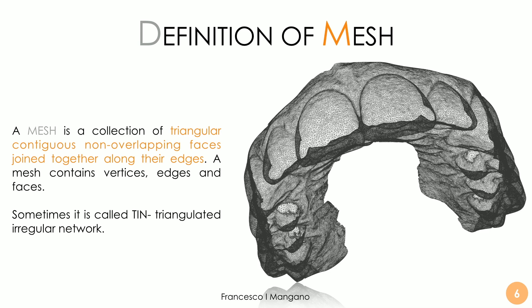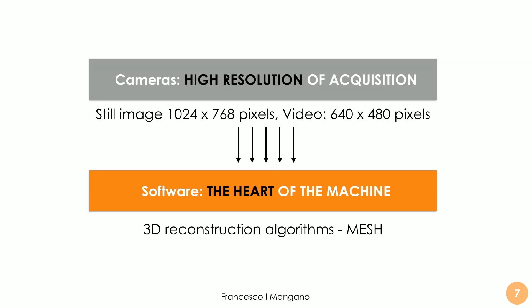A mesh is a collection of triangles and a reconstruction of the surface of the scanned object. It is an approximation, because triangles don't completely reflect the form of the scanned object, but they approximate it as best they can. A mesh contains vertices, edges, and faces — the faces being the triangles. It is sometimes called a triangulated irregular network.